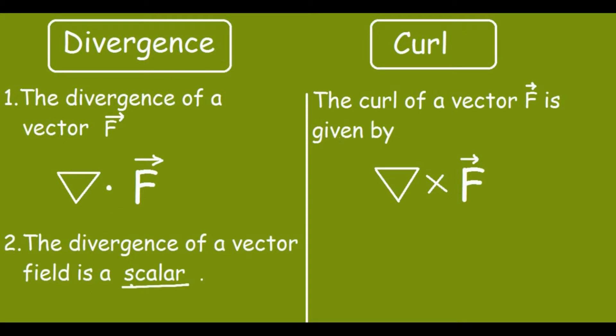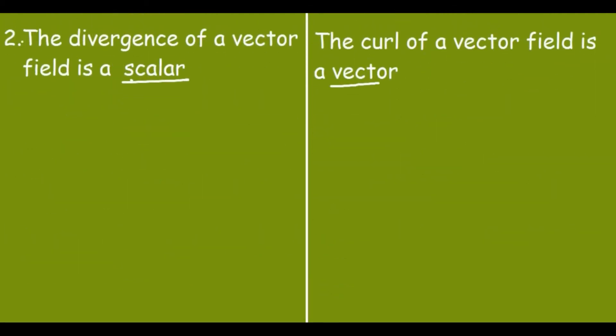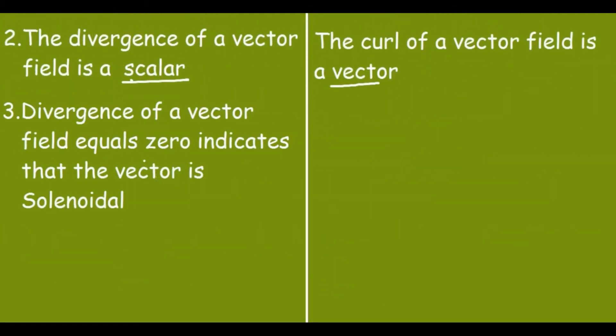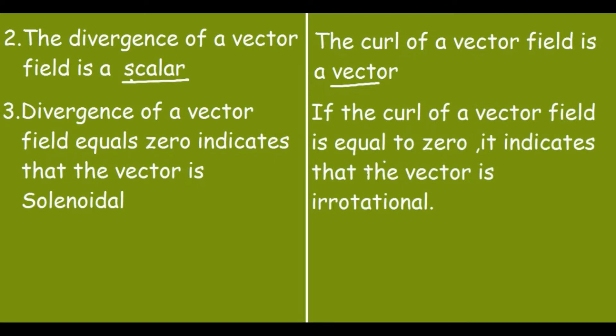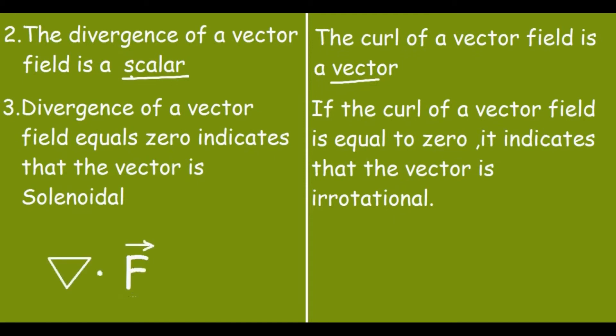The divergence of a vector field is a scalar, and for curl, the curl of a vector field is a vector. Now divergence of a vector field equals zero indicates that the vector is solenoidal. And if the curl of a vector field is equal to zero, it indicates that the vector is irrotational.